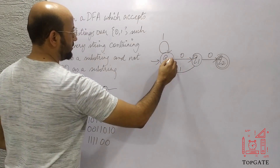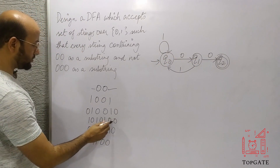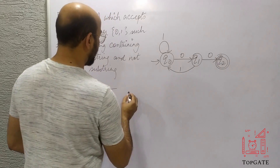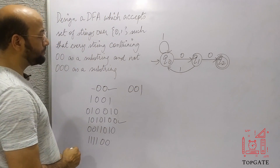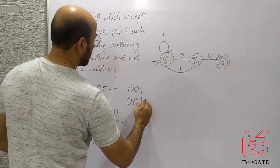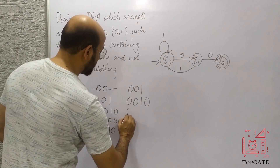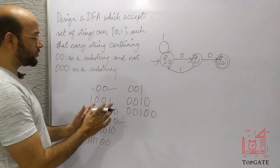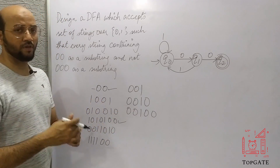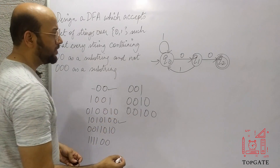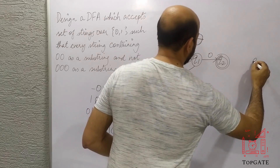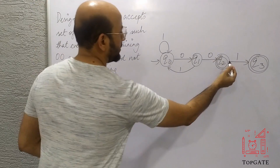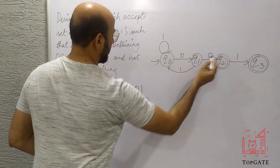Now we also need to accept strings like '001'. So I take one more state q3, make it final, and connect q2 to q3 with input 1. So '001' is accepted. A DFA can have any number of final states; only the initial state must be a single one. This handles cases where '00' is followed by one or more 1s.